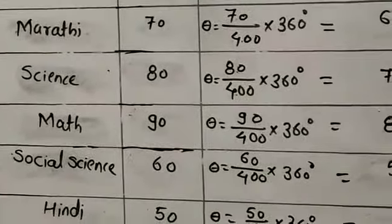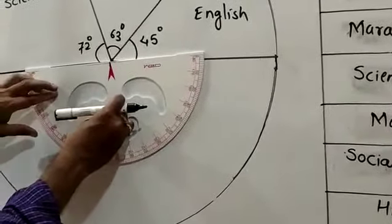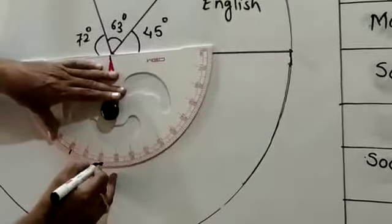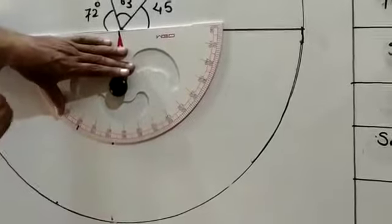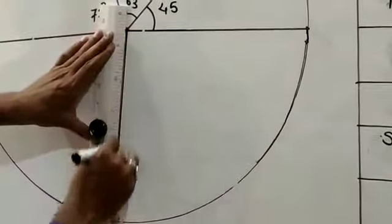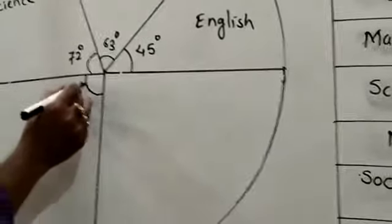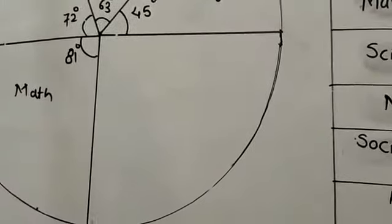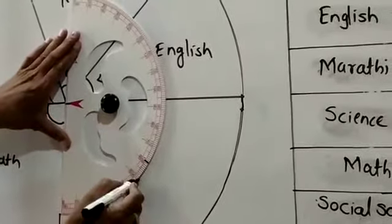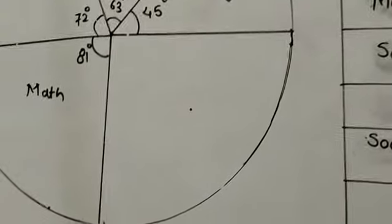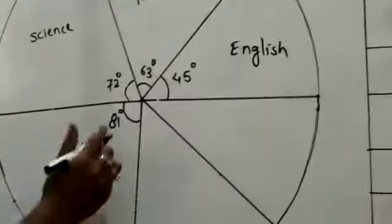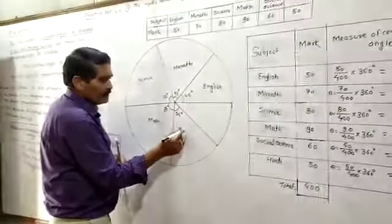Next is Maths. The central angle of Maths is 81 degrees. Adjust the protractor starting from 0: 10, 20, 80, and 81 degrees will come here. Draw the radius. Then, for Social Studies, the central angle is 54 degrees — 50 will come here, 54 will come here. Draw the radius. This 54 degrees is the central angle of Social Studies.